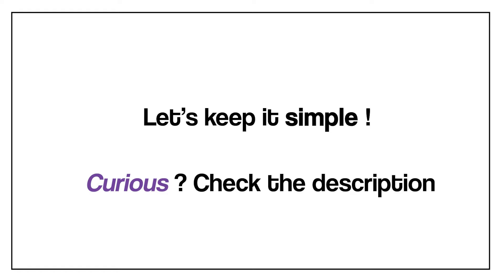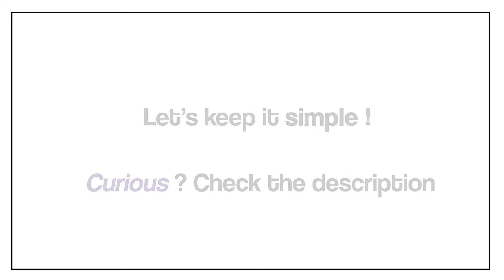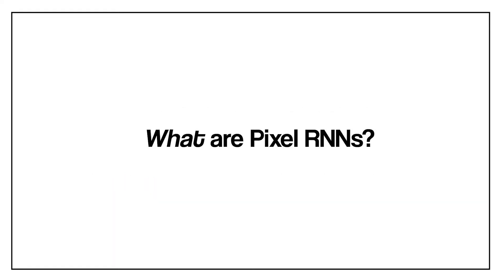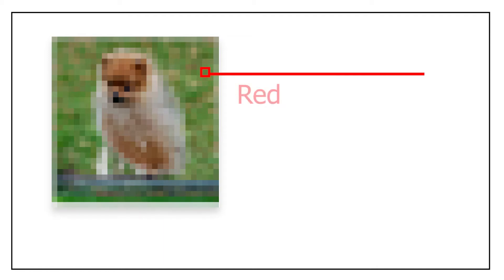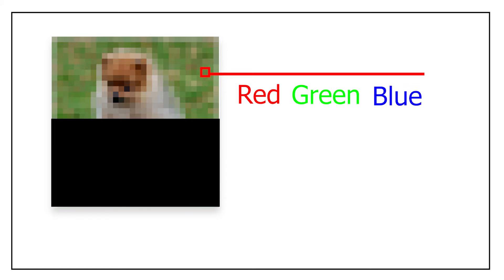So what are pixel RNNs? In image generation we are working with images made of pixels. Each pixel is composed of three values, one for each color channel, namely red, green, and blue. One of the goals of a pixel RNN is to generate the missing information of an image.